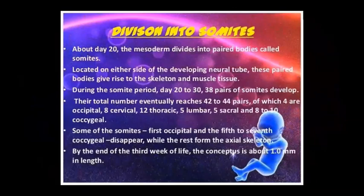Of these 42–44 pairs, there are 4 occipital, 8 cervical, 12 thoracic, 5 lumbar, 5 sacral, and 8–10 coccygeal somites. The 1st occipital and 5–7 coccygeal somites disappear, while the rest form the axial skeleton.